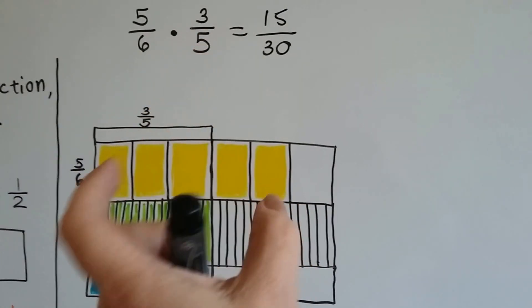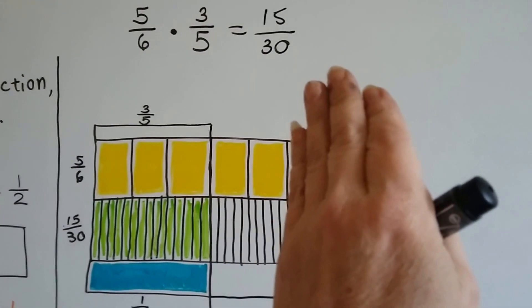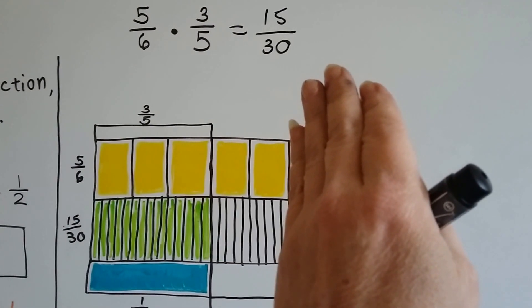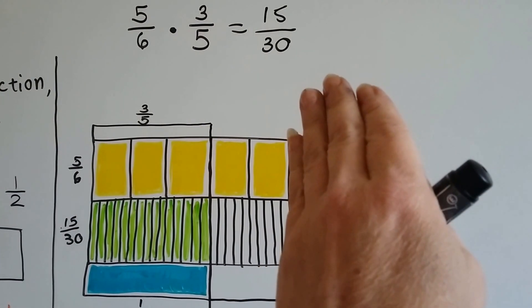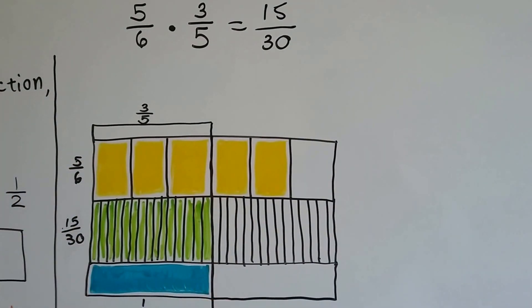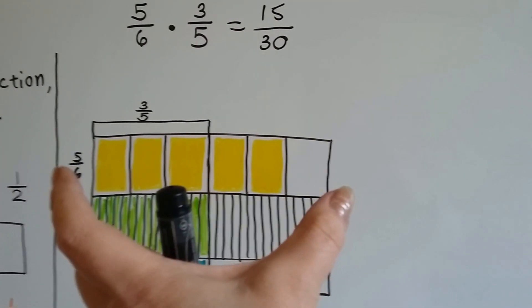So we had 5/6 and our denominator was a six, but we wanted 3/5 of them. So we didn't look at it as six, we looked at it as fifths and we took three of them right here.